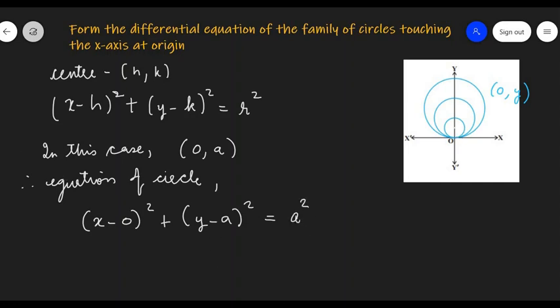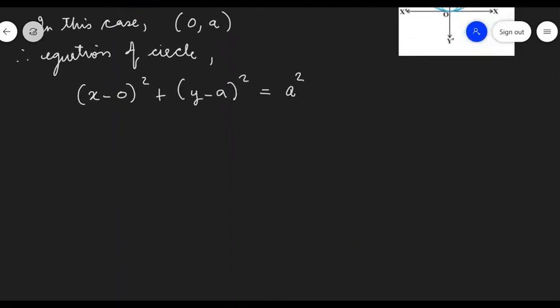We can simplify this and we will get the equation as x² plus, we will use the formula of (a - b)² here. So, a² + b² - 2ab equals a².